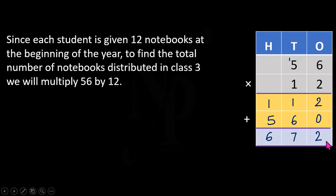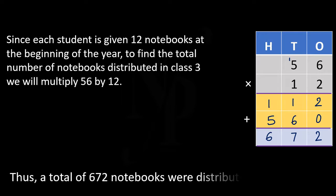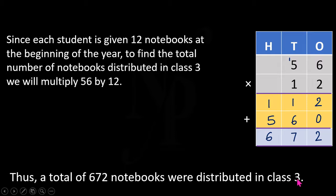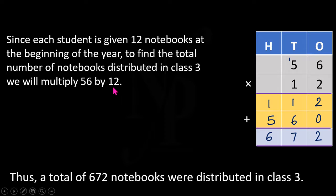We get 672 as the product, which represents the total number of notebooks distributed in class 3. Thus a total of 672 notebooks were distributed. In this problem, both addition and multiplication were involved — addition to find the total students, and multiplication to find the total notebooks distributed to all students of class 3.